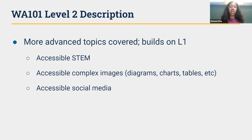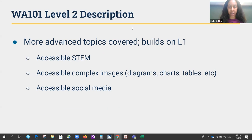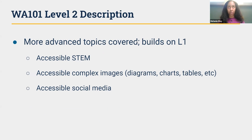We expect to have two additional levels — Level 2 and Level 3. Miranda mentioned in the chat that we're planning to have Levels 2 and 3 starting hopefully next year in 2022. Just to give you a brief description of what we plan to have in Level 2: it will be some more advanced topics that build on what was learned in Level 1. The three main areas of focus will be accessible STEM, accessible complex images — so things like diagrams, charts, figures, and tables — and Level 2 will also cover social media.